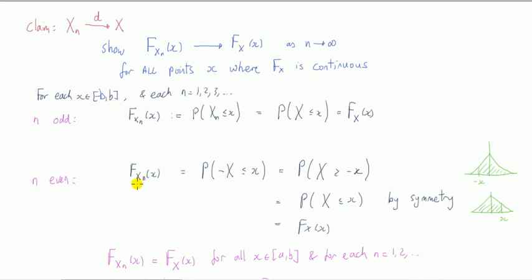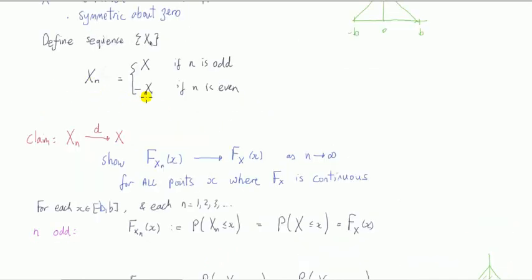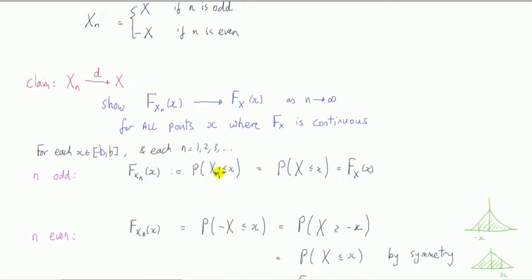Now if you look at this for n is odd, it satisfies this. Now let n be even. For n even, do the same thing. This time, X_n is equal to minus X, so it becomes this.